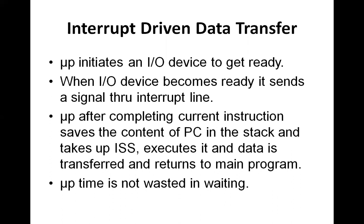Interrupt requests are normally classified into two parts: maskable interrupts and non-maskable interrupts. The 8085 microprocessor has four maskable interrupts and one non-maskable interrupt. Among the four maskable interrupts, one is non-vectored, which requires external hardware to supply the call location to restart execution, and the other three are vectored to specific locations. The microprocessor can ignore or delay a maskable interrupt request if it is performing a particular task; however, it must respond to a non-maskable request immediately.